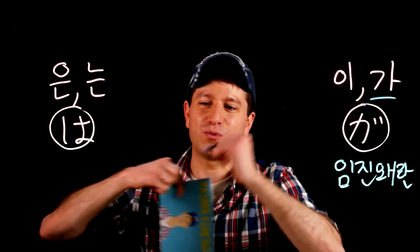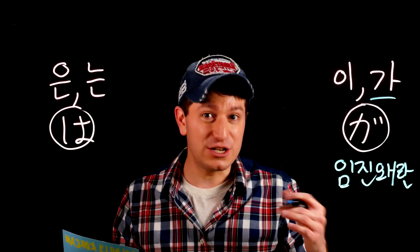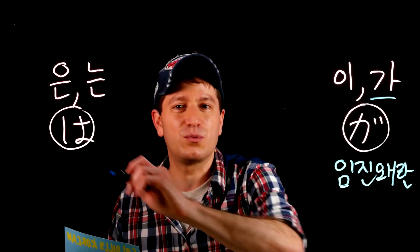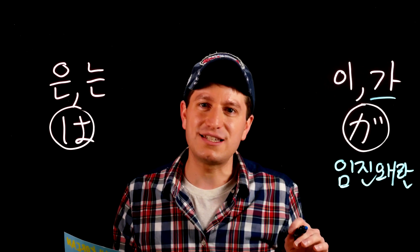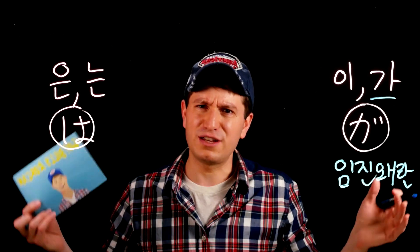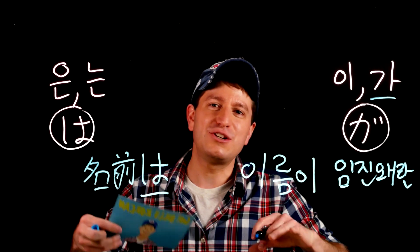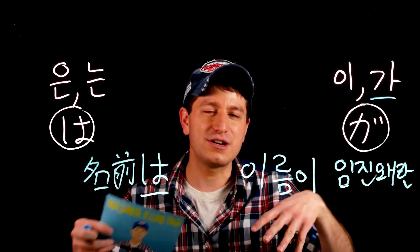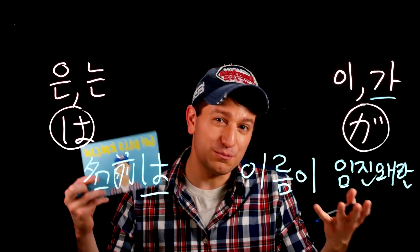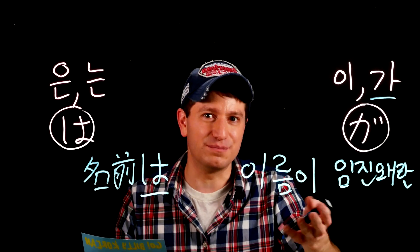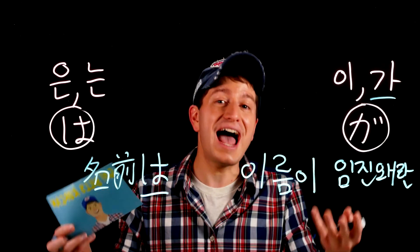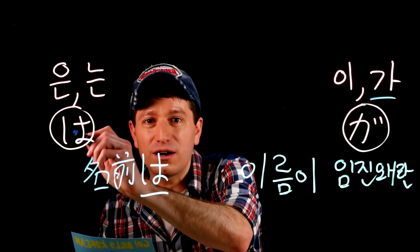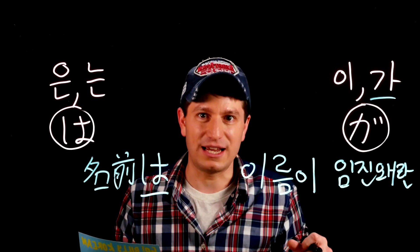One thing you'll notice right away is that in Japanese, when you're introducing yourself or saying someone's name, they use the topic marker は. Whereas in Korean, they will more often use the subject marker 이 after 이름. It's not that you have to, but typically it just tends to be used more this way in Korean.